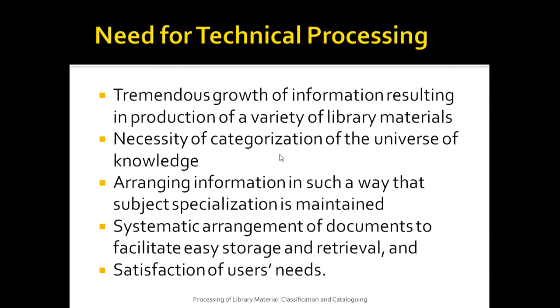Let us now take a look at what is the need for technical processing of documents. Tremendous growth of information resulting from production of a wide variety of library material has necessitated that we categorize the documents. There is a necessity of categorization of the universe of knowledge. Arranging of information has to be carried out in such a way that subject specialization information is maintained, and systematic arrangement of documents facilitates easy storage and retrieval. Cataloging helps satisfy users' needs by providing whatever material they require.